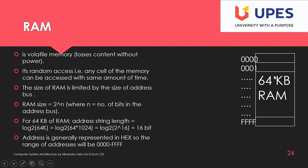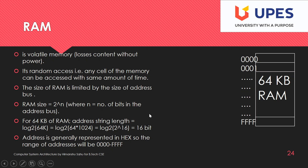In a 64 KB RAM example, the address length is 16 bits, but they are represented in hexadecimal. Hexadecimal compresses 16 bits into 4 hex digits, so the address range is represented as 0000 to FFFF. Main memory addresses are generally represented in hex format.